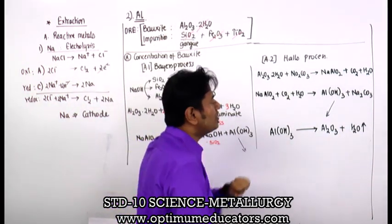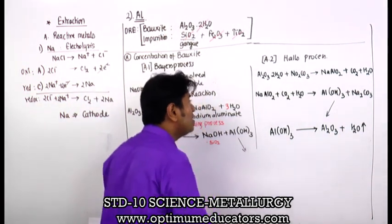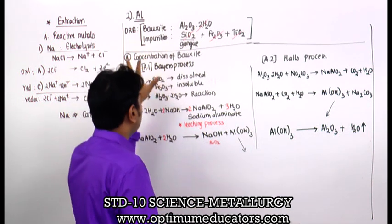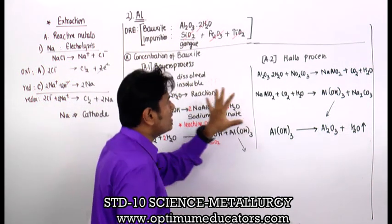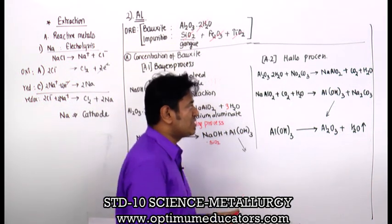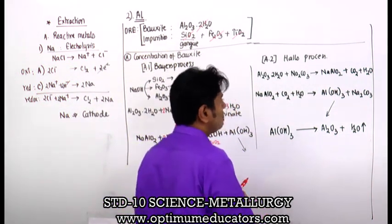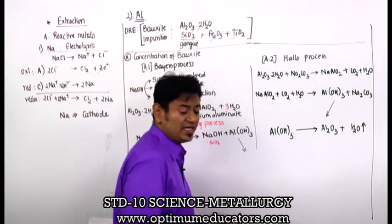So Al2O3 is finally obtained. There are two options available - Bayer's process and Hall's process - both giving alumina as the final product from the concentration of bauxite. These are individual questions worth 4 marks or 3 marks that can appear in board exams.